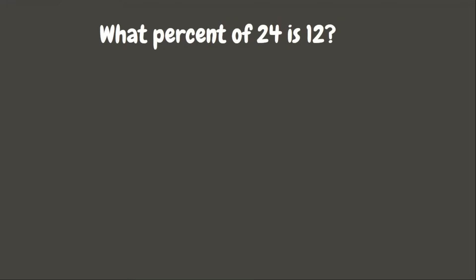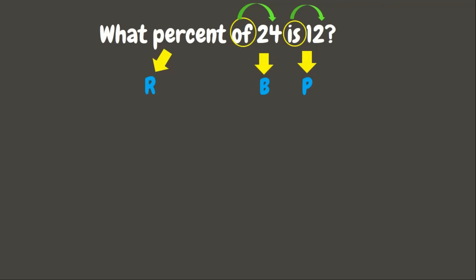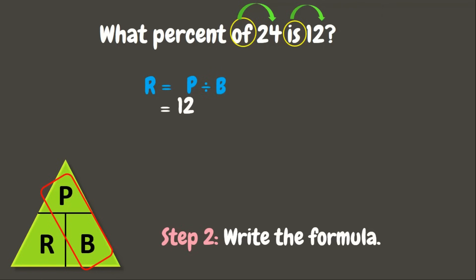Next one. What percent of 24 is 12? Again, let's identify the missing term first. Since 24 comes after the word 'of', that is our base. And 12, which comes beside the word 'is', is our percentage. And obviously, the missing here is the percent or the rate. Now let's try the formula. R equals P divided by B. That means to get the rate, we need to divide 12 by 24.